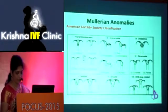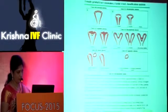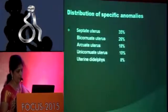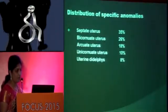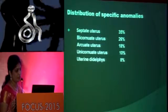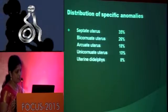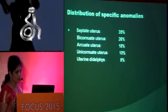This is the American Society classification. The European classification is also presented. In the ACOG classification, not only the Mullerian anomalies but also the urogenital, cervical, vaginal, and cloacal anomalies are included. Regarding the distribution of specific anomalies, septate uterus is the most common.